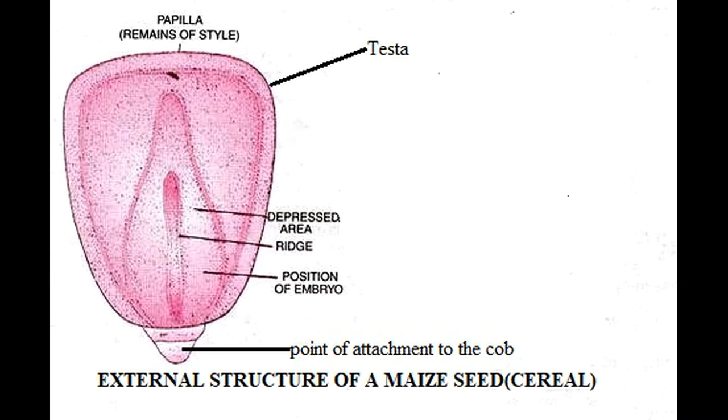Next we want to look at the external structure of a cereal seed, using maize as an example. Maize grain may be whitish, yellow, violet, or red in color. It has a smooth and shiny surface. The grain is conical and flattened. It is attached to the cob by its narrow pointed end which is surrounded loosely by a shallow husk. The broader end is roundish.